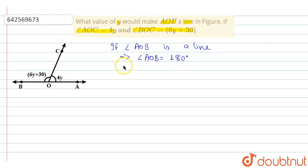Now angle AOB can be written as angle BOC plus angle AOC, and that will be equal to 180 degrees. It is given that BOC is 6y plus 30 and angle AOC is 4y, so that will be 180 degrees.